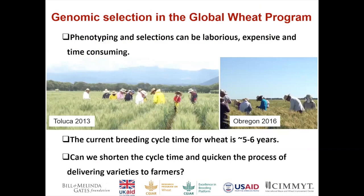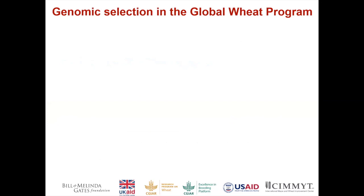Why do we go for GS in the Global Wheat Program? Because phenotyping and selection can be very laborious, expensive, and time-consuming. The current breeding cycle time for wheat is about five to six years. The question is: can we shorten that cycle time and quickly deliver varieties to farmers? By cycle time, I mean the time from making a cross to when you recycle that particular line as a parent. Can we use predictions to skip some years and quickly advance generations?